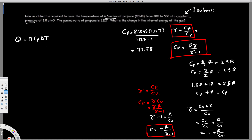Now we can plug into Q equals N times CP times delta T. We have 6.5 moles multiplied by 73.78, multiplied by delta T which is 50 minus 30 equals 20. Calculating this gives Q equals 9591.4 joules. That is the heat required — the answer to the first question.